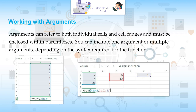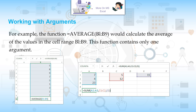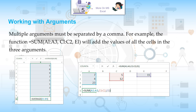Working with arguments: Arguments can refer to both individual cells and cell ranges and must be enclosed within parentheses. You can include one argument or multiple arguments depending on the syntax required for the function. For example, =AVERAGE(B1:B9) would calculate the average of the values in the cell range B1 to B9 — this function contains only one argument. Multiple arguments must be separated by a comma. For example, =SUM(A1:A3,C1:C2,E1) will add the values of all cells in the three arguments.